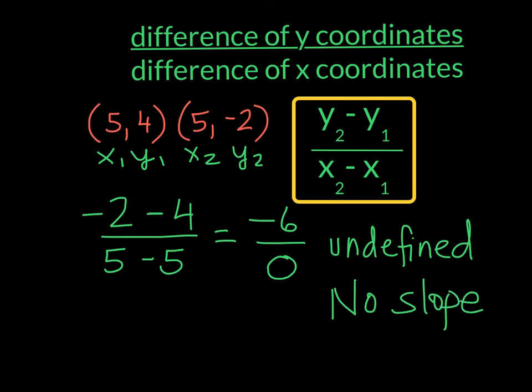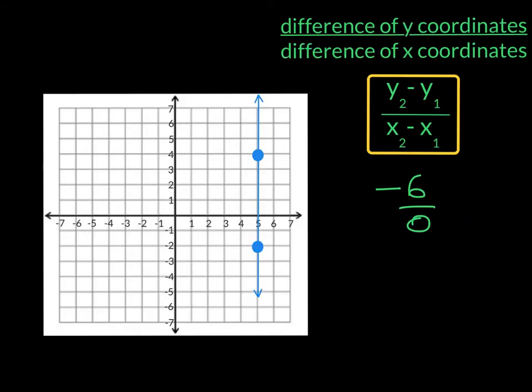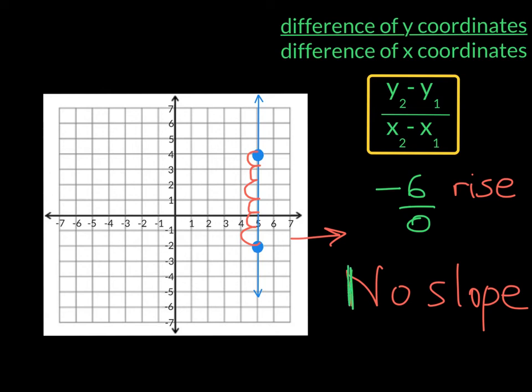Here's the graph, and we see that we go down 1, 2, 3, 4, 5, 6. So the rise is negative 6. But our run, we don't run from the first point to the second point. It's 0. This is no slope. How does this word help us remember? Well, in the n, we have two vertical lines, which is like the vertical line of the graph.